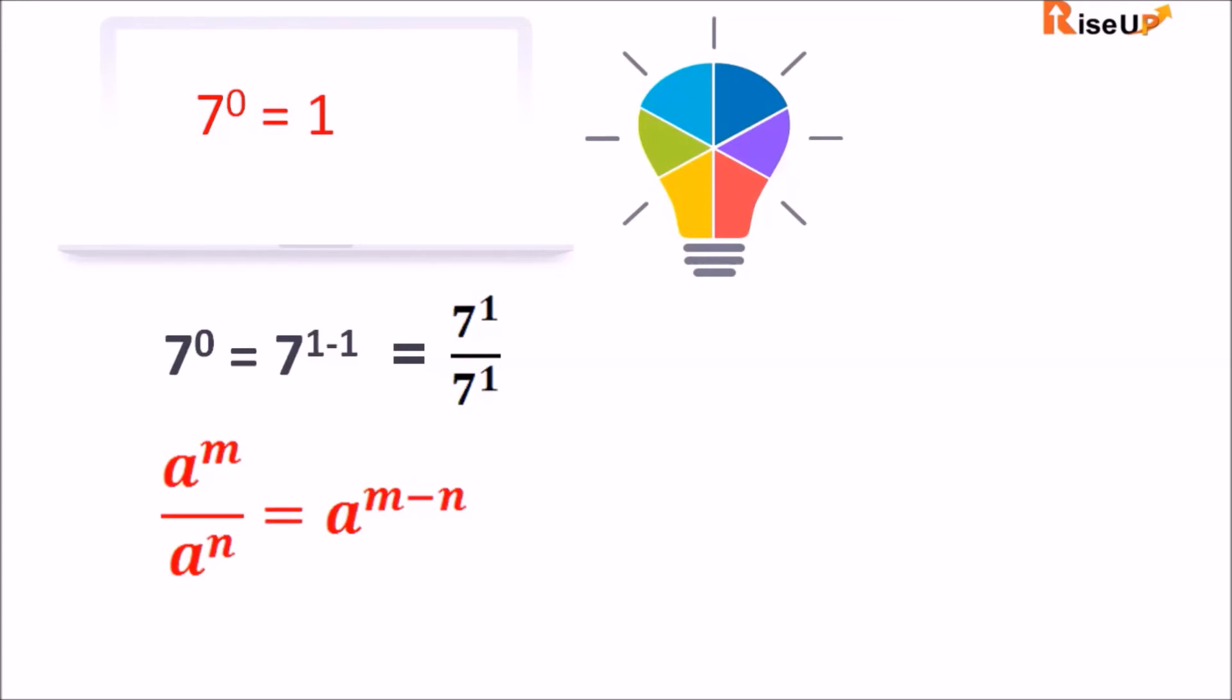Now we know 7 raised to power 1 is 7. So 7 divided by 7 equals 1. This is the reason why any number raised to power 0 is always 1.